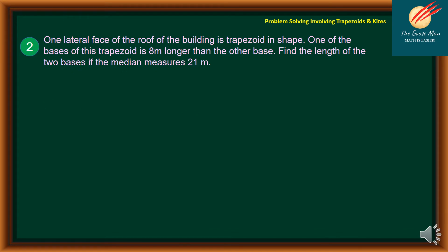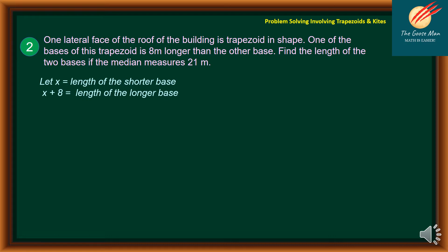Let's move on to the next problem. One lateral face of the roof of a building is trapezoid in shape. One of the bases of this trapezoid is 8 meters longer than the other. Find the length of the two bases if the median measures 21 meters. For our representation, we will let X as the length of the shorter base, and X plus 8 as the length of the longer base.